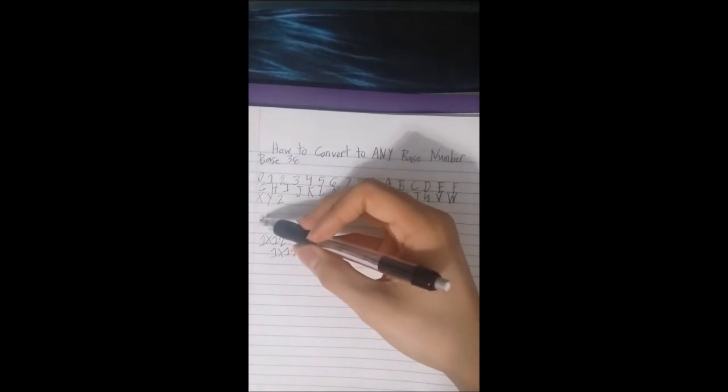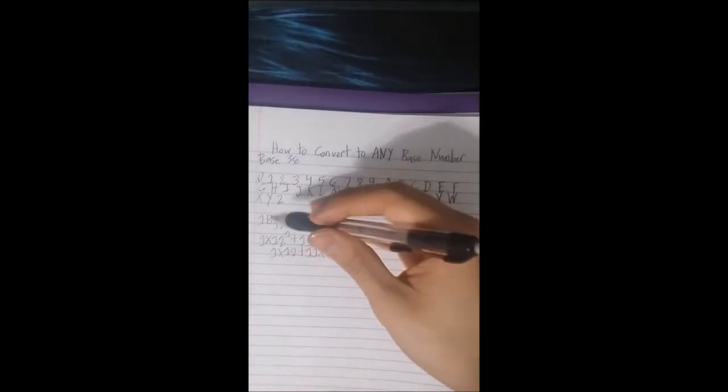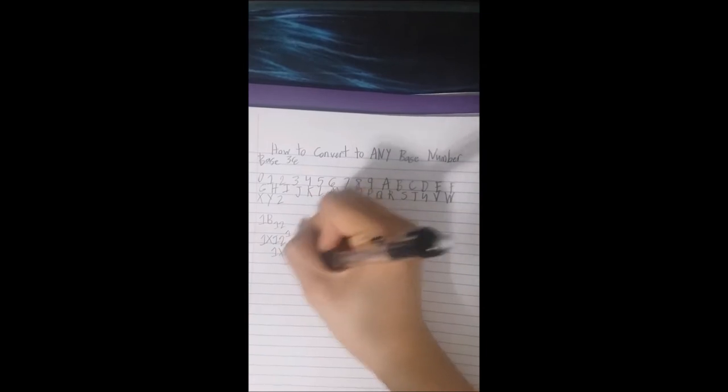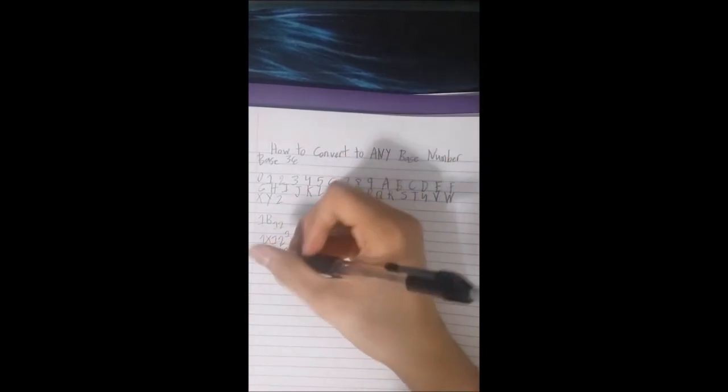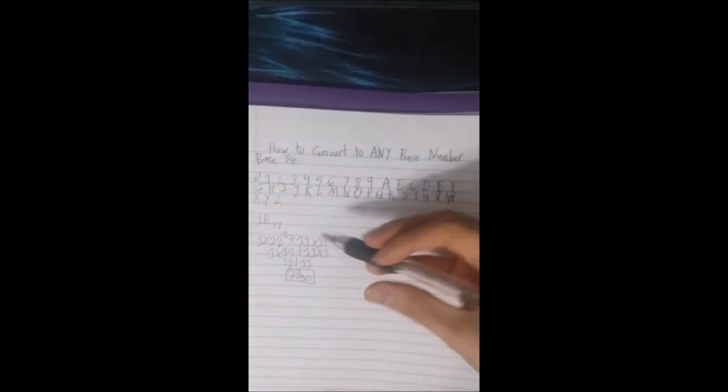Just to refresh your memory, your first digit always starts at power 0, then after that your second digit is power 1, then etc. as you have more digits, and that's how you convert from any base number to a decimal.